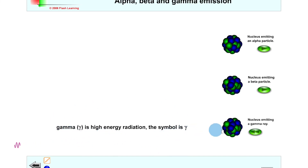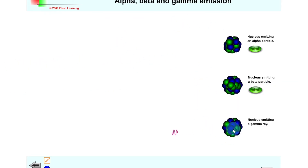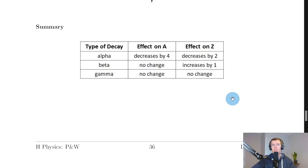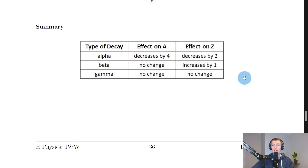To summarize all three types of decay: alpha decay causes the mass number to decrease by four and the atomic number to decrease by two. Beta decay causes no change to the mass number but the atomic number increases by one. Gamma decay causes no change to either the mass number or the atomic number. It's recommended to learn this summary table as it helps when working with nuclear reactions and nuclear equations.